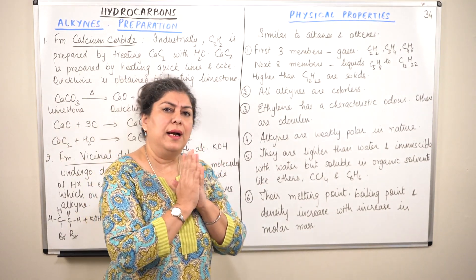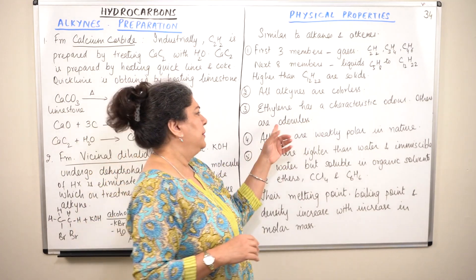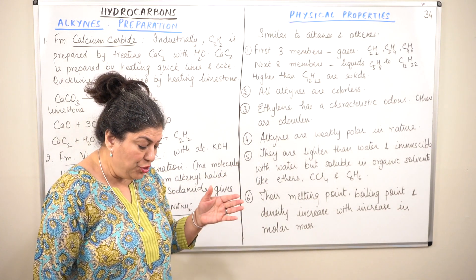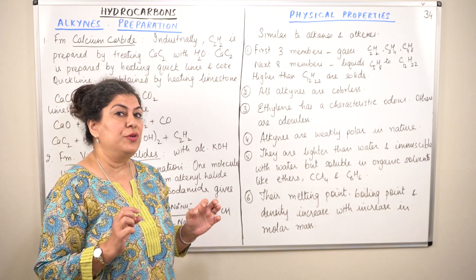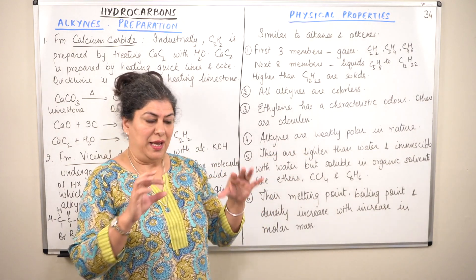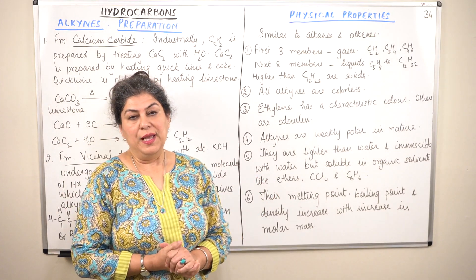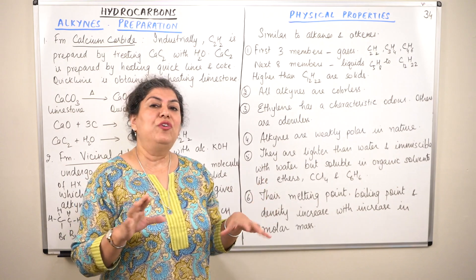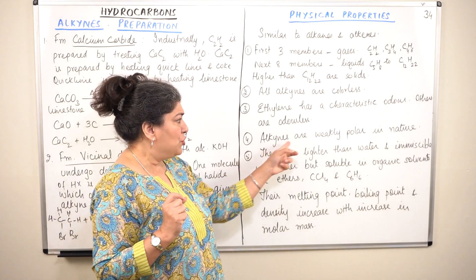All alkynes are colourless. All alkynes are odourless except for ethyne — ethyne, or ethylene by common name, has a characteristic odour, but all other alkynes are odourless. Alkynes are weakly polar in nature. Alkanes are non-polar because there is not much electronegativity difference between carbon and hydrogen, and every carbon forms four single bonds, so the molecule is absolutely non-polar. In alkynes, a mild polarity is introduced, so we say they are weakly polar in nature.